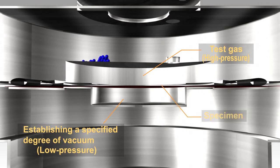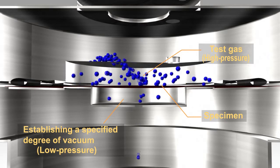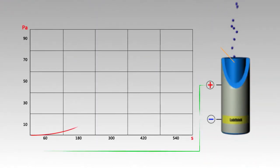The test gas then permeates from the high pressure chamber to the low pressure chamber under the gradient of differential pressure. Finally, the computer calculates the barrier properties of the test specimen by measuring the pressure change in the low pressure chamber.